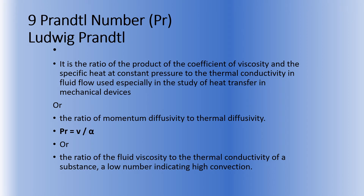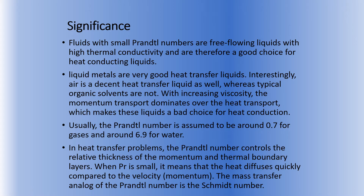The ninth dimensionless number is the Prandtl number, denoted by Pr. There are three definitions mentioned here. The first is that the Prandtl number is the ratio of fluid viscosity to the thermal conductivity of a substance. If we have a lower Prandtl number, then there will be higher convective heat transfer taking place.